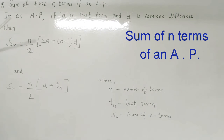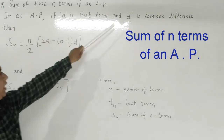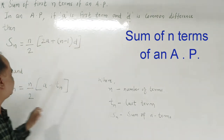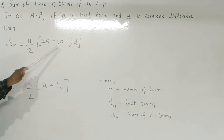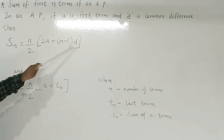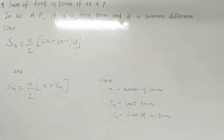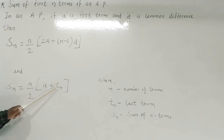The sum of first n terms of an AP: if a is the first term and d is the common difference, then the sum Sn is given by the formula Sn = n/2 × (2a + (n−1)d). The second alternate formula, when the first and last terms are given, is Sn = n/2 × (a + Tn).